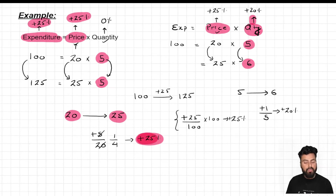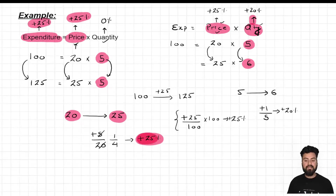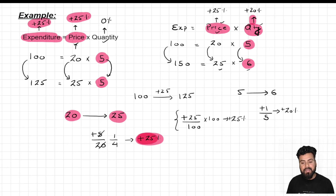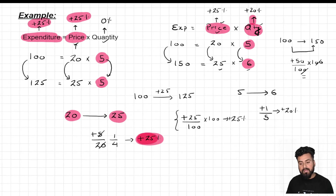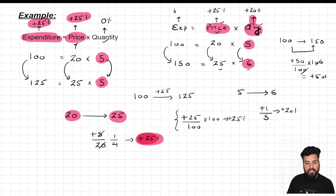Now let's see what effect this has on expenditure when both right-hand side variables are changed. New expenditure is 25 into 6 = 150. Percentage change in expenditure: expenditure was 100, it became 150. Increase is 50. 50 over 100 gives 50% increase in expenditure.